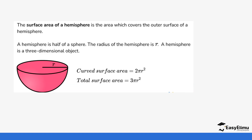When calculating the surface area of a hemisphere, notice that a hemisphere is half of a sphere. However, the formula is 3πr² — not 2πr². The 2πr² represents only the curved surface area. So the total surface area formula for a hemisphere is 3πr².